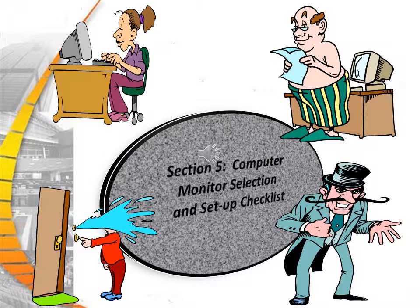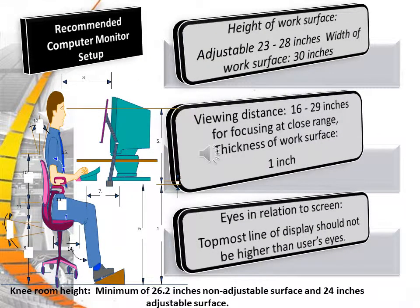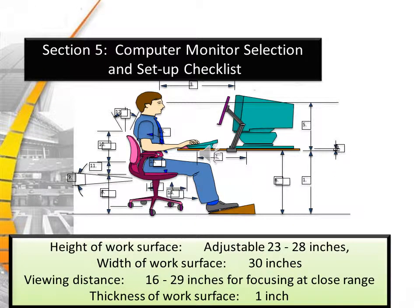Section 5: Computer Monitor Selection and Setup Checklist. If your work surface height is adjustable, it should be 23 to 28 inches. The width of the work surface should be 30 inches. The viewing distance is 16 to 29 inches for focusing at close range, and the thickness of the work surface should be 1 inch. Your eyes in relation to the screen: the topmost line of display should not be higher than the user's eyes.